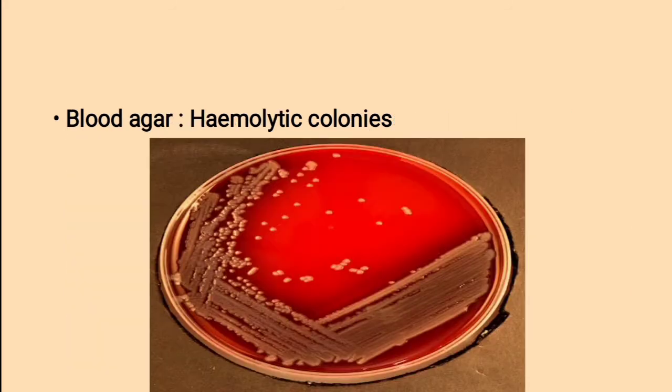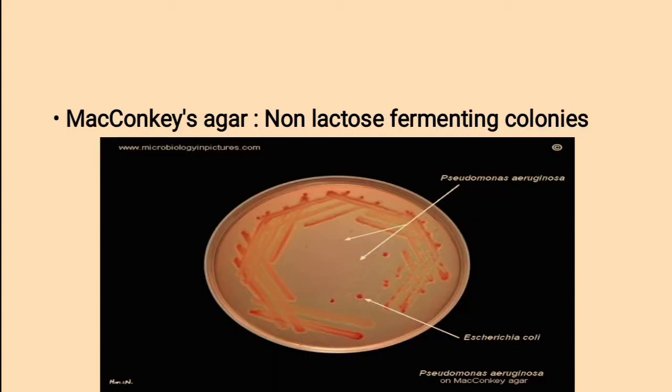On blood agar they form haemolytic colonies. On MacConkey's agar they produce non-lactose fermenting, that is colorless, colonies.